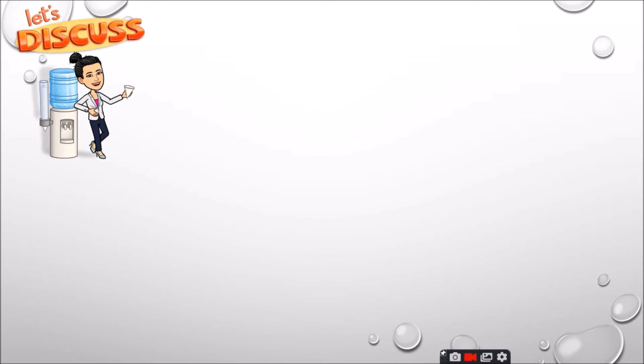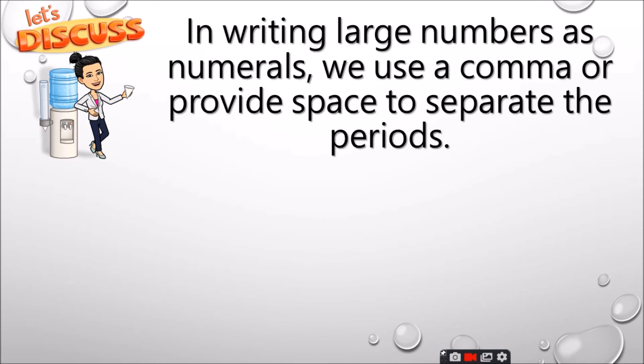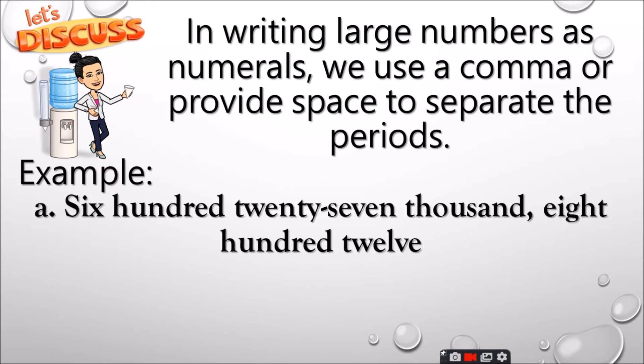Now, let's move on. In writing large numbers as numerals, we use a comma or provide space to separate the periods. So, example. 627,812. Using a comma, so we write 627,812.